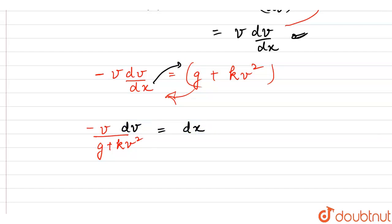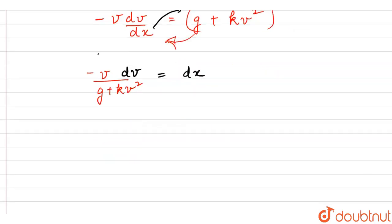Let's integrate on both sides. Let's put the limits. Initially when the displacement is 0, the velocity was u. After it reaches a certain height H max, let's call it capital H, the velocity would be 0.